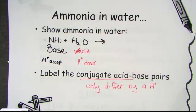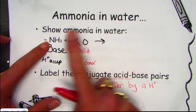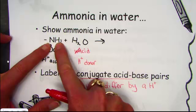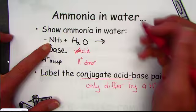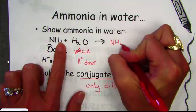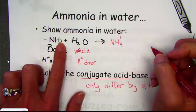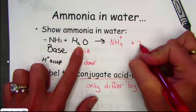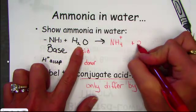Since bases are proton acceptors, water must be the proton donor. If water donates a hydrogen ion and ammonia accepts it, we have a transfer of a hydrogen. Water donates, ammonia accepts. Ammonia had three hydrogens, now it has four, carrying a +1 charge — we call that the polyatomic ion ammonium. Water, with one less hydrogen, forms its conjugate called hydroxide, OH⁻.